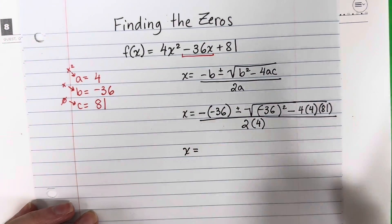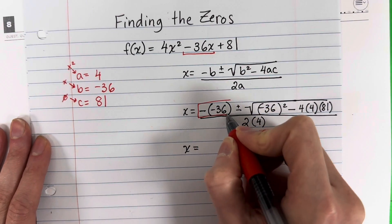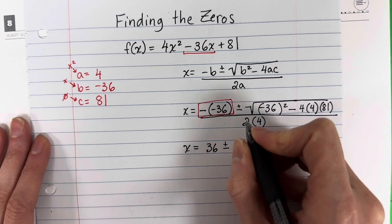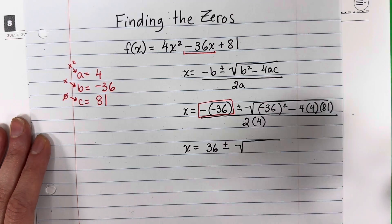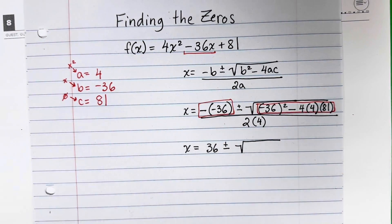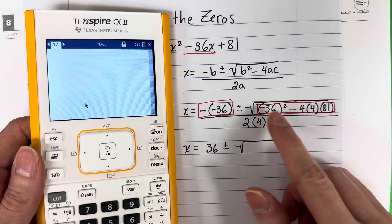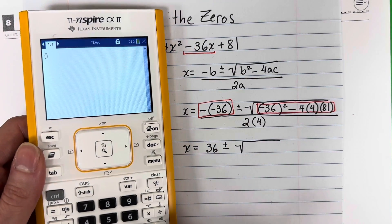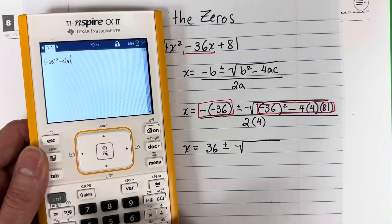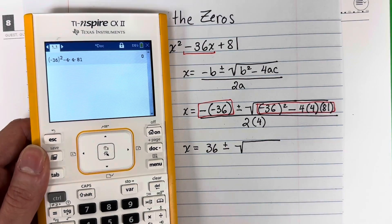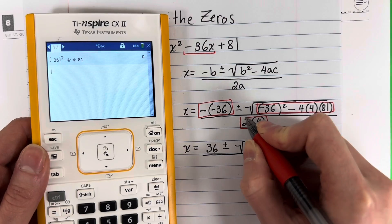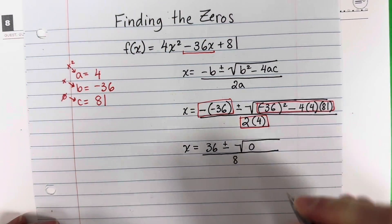Now simplify: negative of negative 36 is positive 36, plus or minus the square root. We compute the discriminant — everything inside the square root — in the calculator: negative 36 squared minus 4 times 4 times 81 equals 0. For the denominator, 2 times 4 is 8. So we have x equals 36 plus or minus the square root of 0, divided by 8.